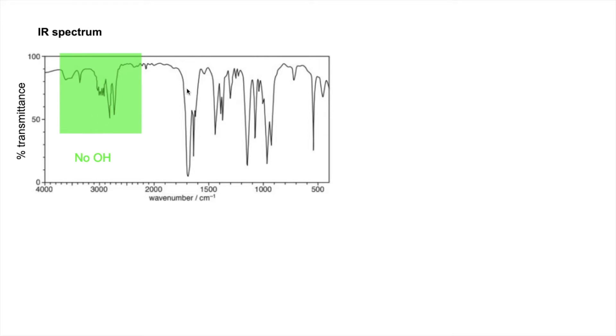The next key region is this one here. So that's indicative of a C=O. So what can we say from that? Compound F is likely to be an aldehyde or a ketone.